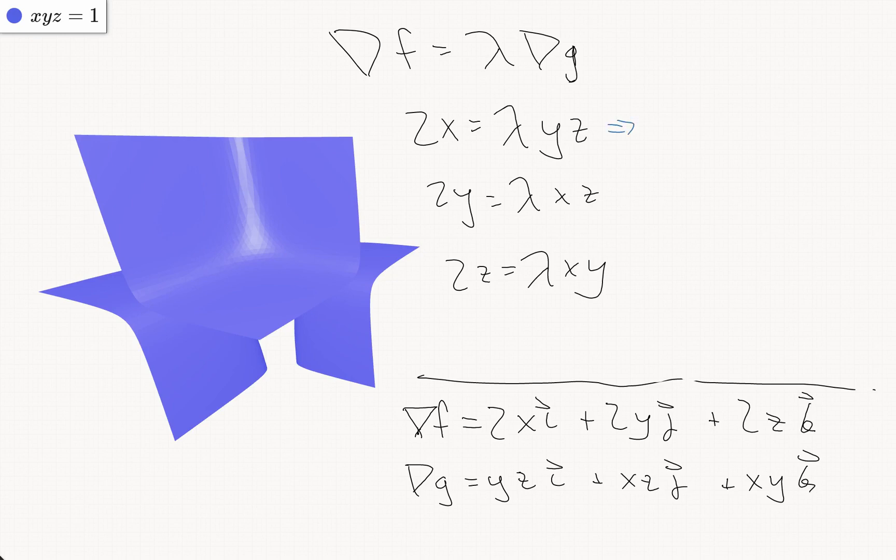So the first of these gives lambda equals 2x over yz. And if we put that into the remaining equations, we get 2y equals 2x over yz times xz, and 2z equals 2x over yz times xy. And so these cancel, and these equations become y squared equals x squared, and z squared equals x squared.